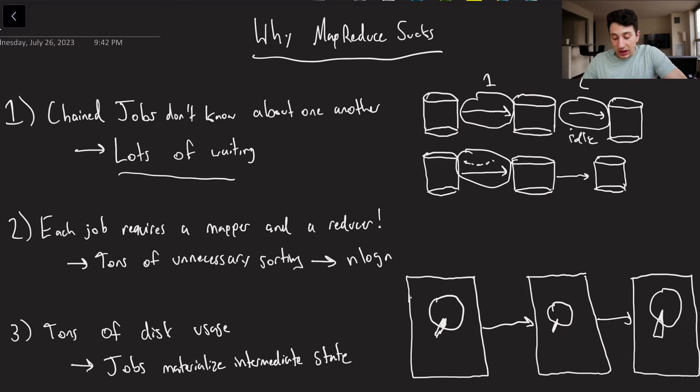A second thing is that each job requires a mapper and reducer. And frankly, after mapping one time, a lot of the time, we don't really need another mapper. Especially because keep in mind that mappers actually perform sorting functionality. And doing a bunch of unnecessary sorting is n log n complexity, which is super costly when it's on a big data set, such as the ones we're using in batch processing.